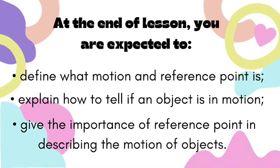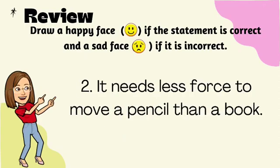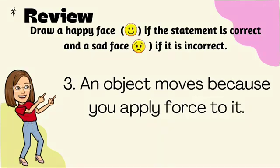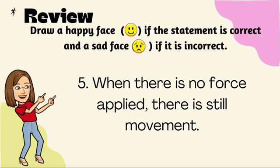But before we proceed, let's see what you've learned in Grade 4. Direction: Choose a happy face if the statement is correct and a sad face if it's incorrect. Number 1: A wooden table requires greater force to move than a plastic chair. Number 2: It needs less force to move a pencil than a book. Number 3: An object moves because you apply force to it. Number 4: If you kick a basketball and a golf ball with the same amount of force, the basketball will move farther. Number 5: When there is no force applied, there is still movement.